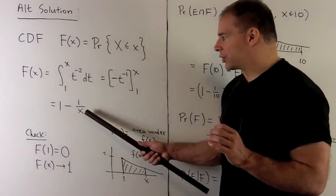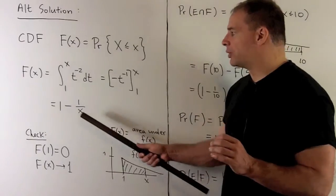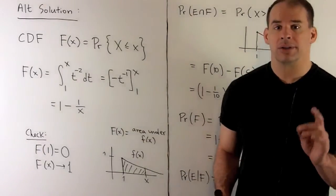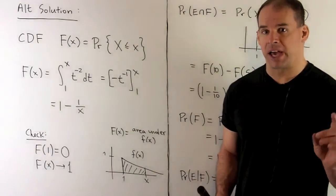Now, if I let x go to infinity here, this term's gonna go to 0, so we're gonna get out of 1. So our cumulative distribution function checks out.